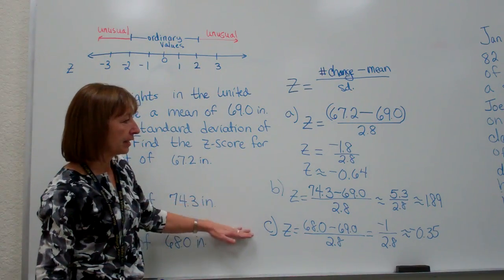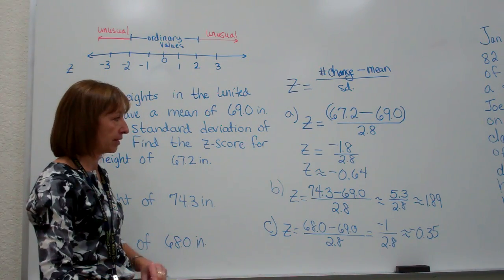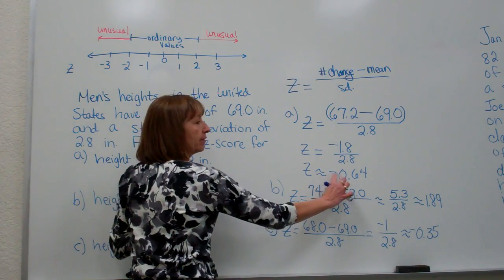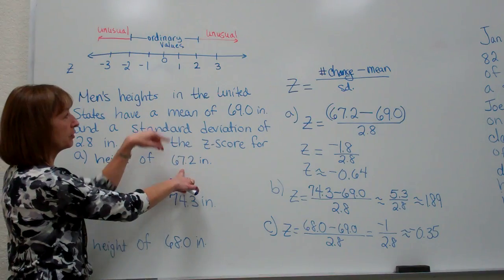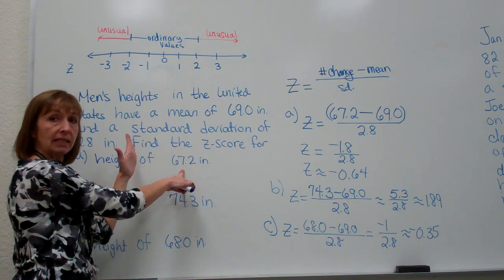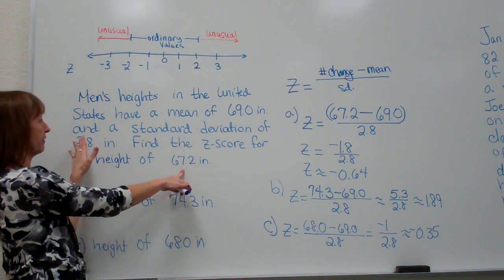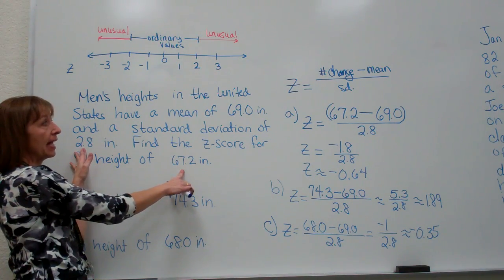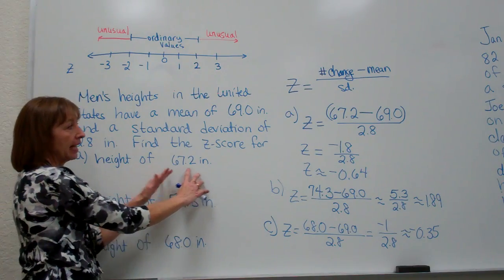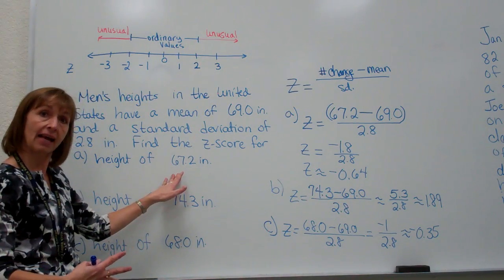Now, looking at these, you can see how we can have a little bit of a common sense aspect to make sure that we are on the right track. The z-score for our data value of 67.2 came out to be negative 0.64. Well, 67.2 is smaller than the mean, so it's to the left of the mean on a number line. Its z-score came out negative. And if I took my 69.0 and subtracted one standard deviation, subtracted off 2.8, I would be at 66.2. So I'm not quite one full standard deviation below the mean, and that's what it came out as. I'm at negative 0.64, not quite one standard deviation below the mean.